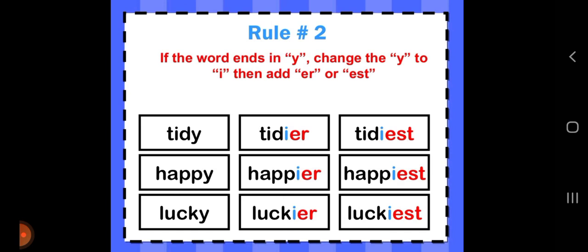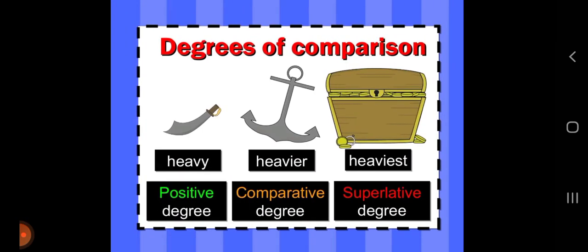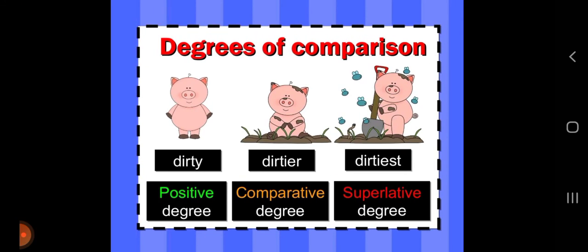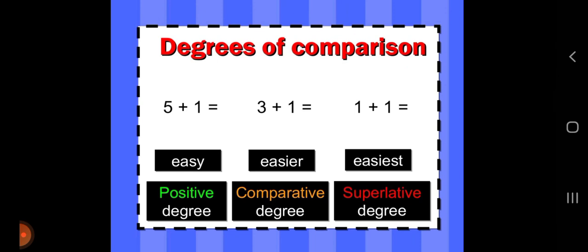Rule number two: if the word ends in Y, change the Y to I, then add ER or EST — giving IER or IEST. For example: tidy, tidier, tidiest. Happy, happier, happiest. Lucky, luckier, luckiest. Heavy, heavier, heaviest. Dirty, dirtier, dirtiest. Easy, easier, easiest.